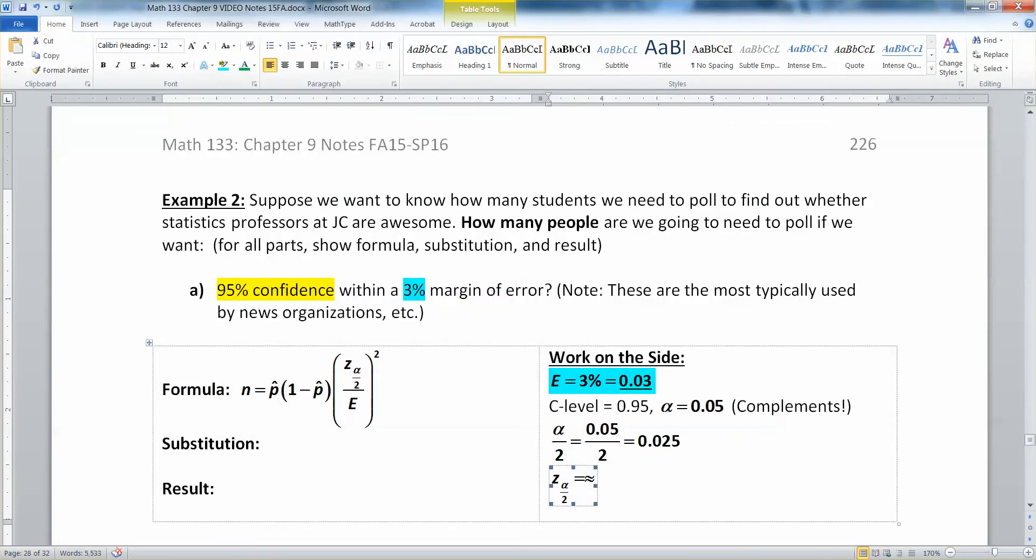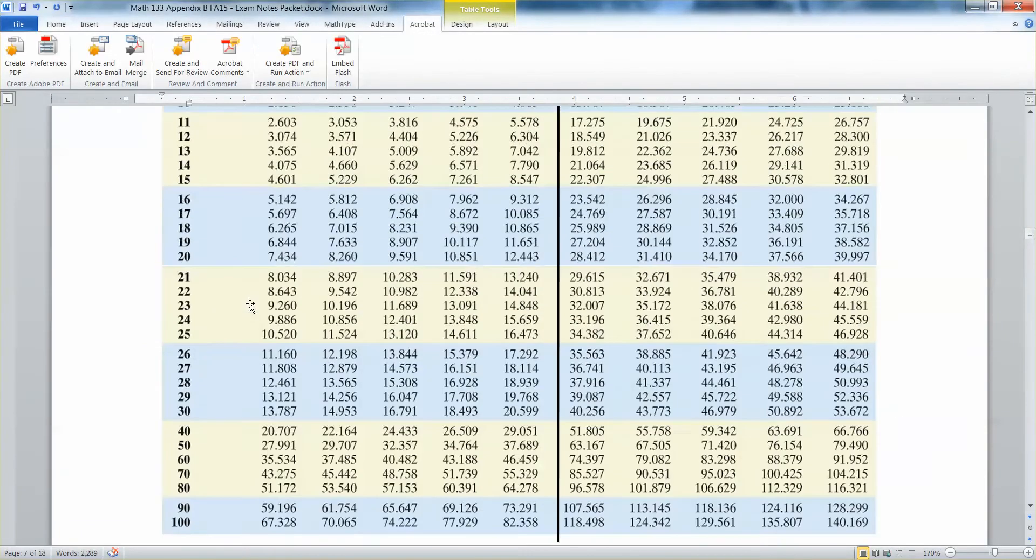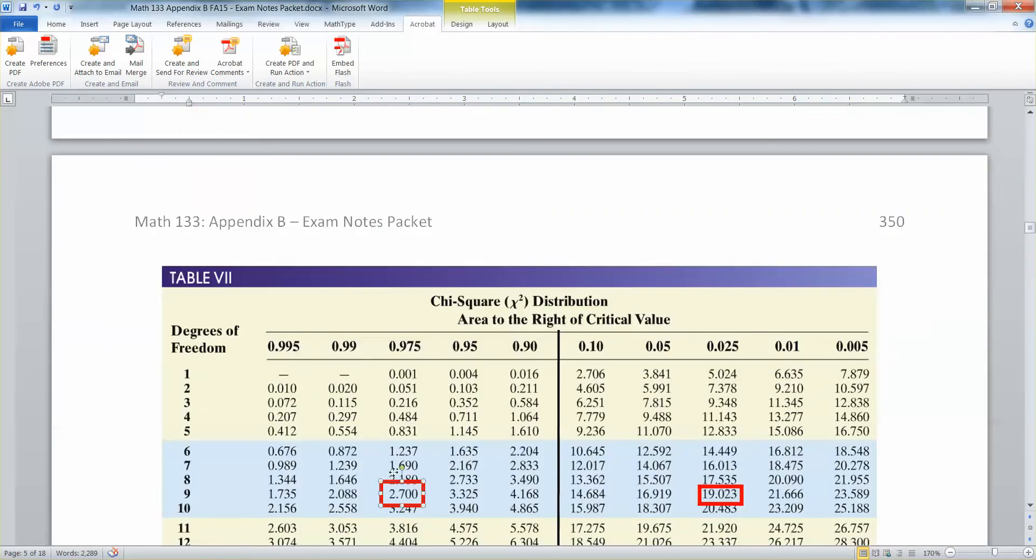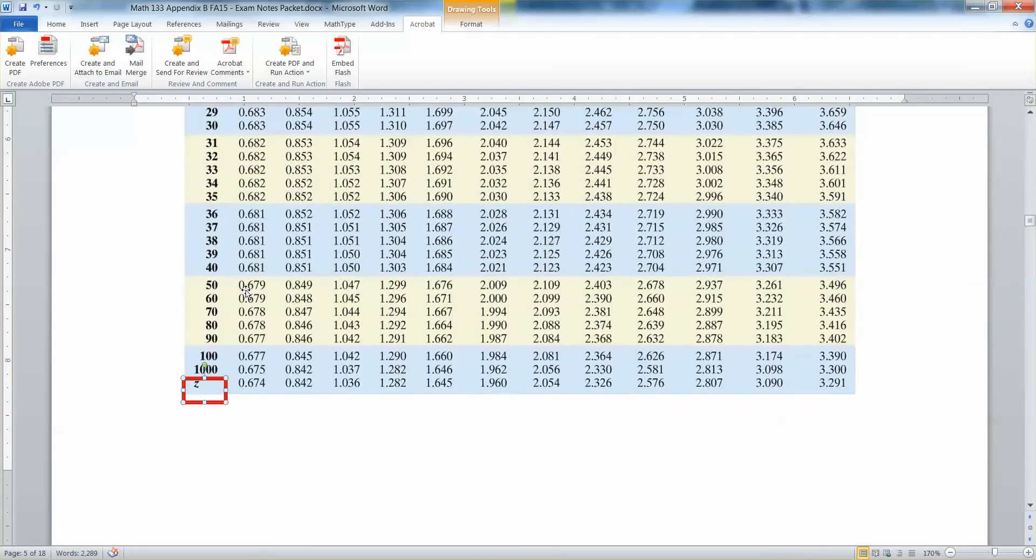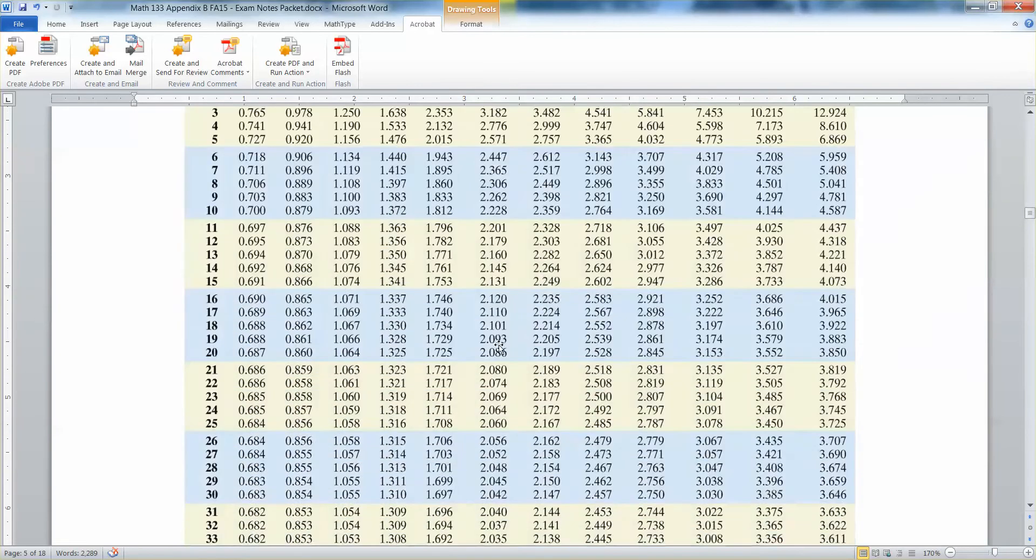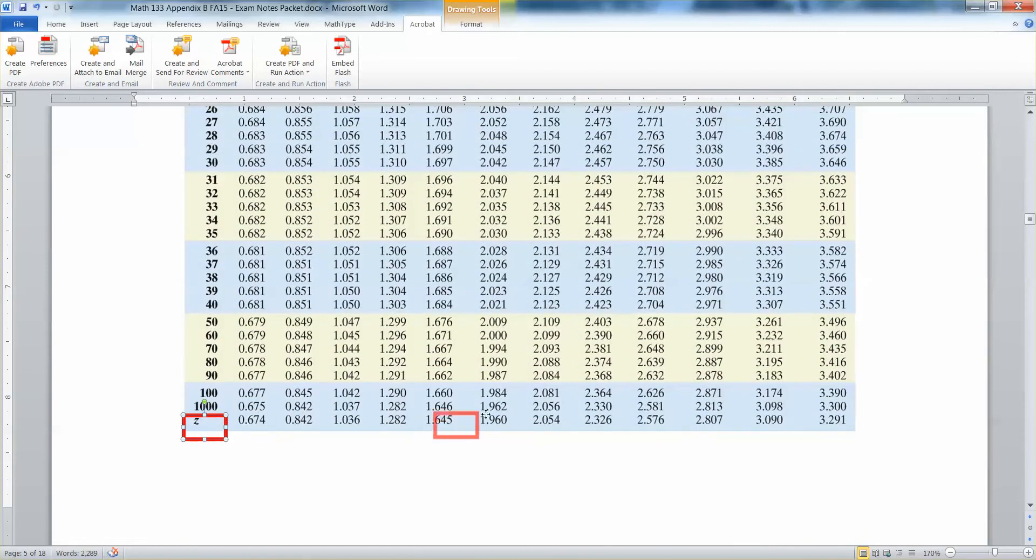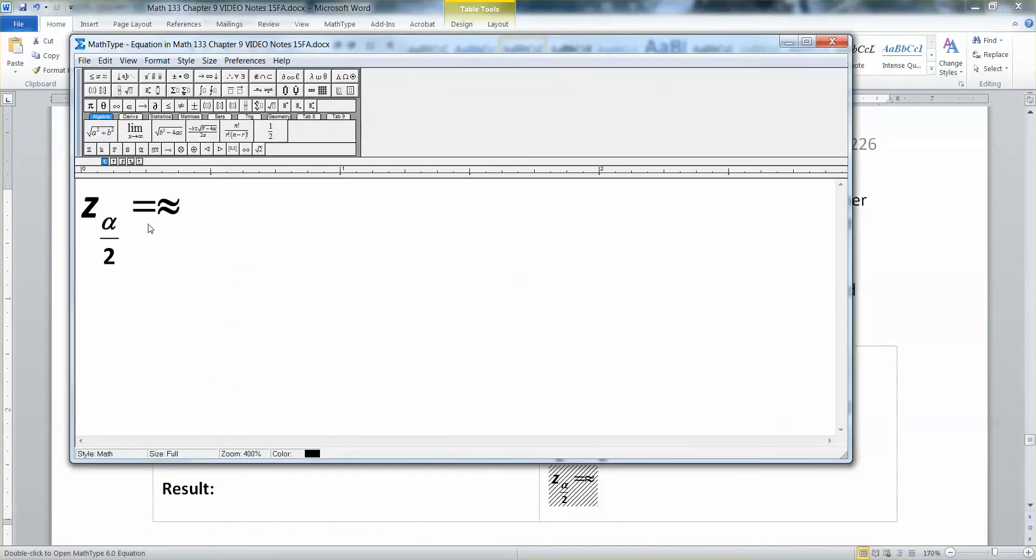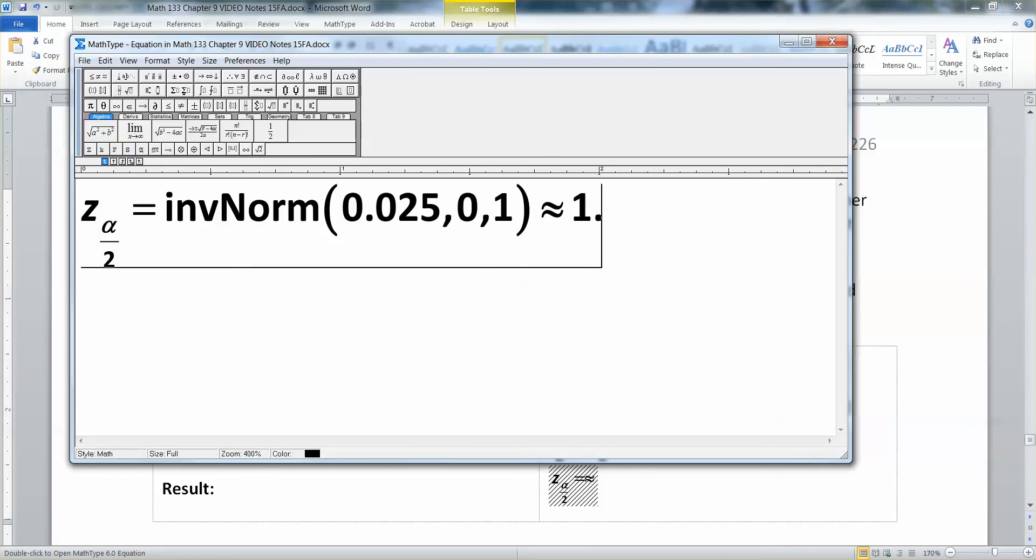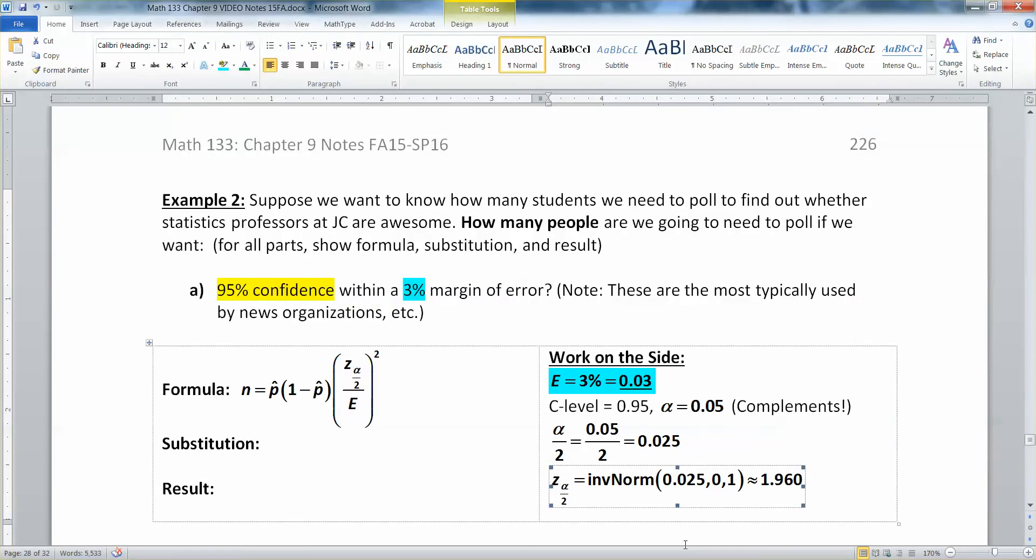Or remember, you can use the table up here. You can use the bottom row of the t-table. When you get to the bottom row of the t-table, do you see how it says z right there? So you say, okay, I want the 0.025 column, which is right here in the middle, and that means that I want 1.960. There it is, right there. So either from the t-table or from inverse norm, you need to have inverse norm 0.025 comma 0 comma 1, and you get 1.960. Technically, it's the negative one, but it doesn't really matter.